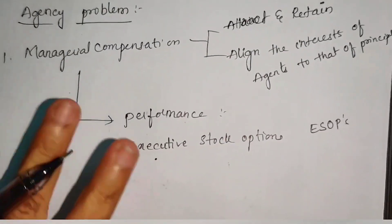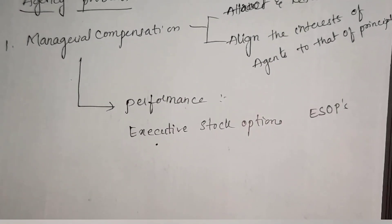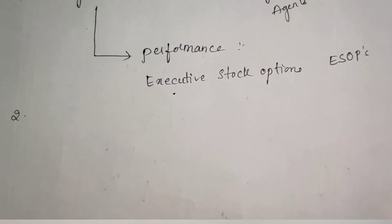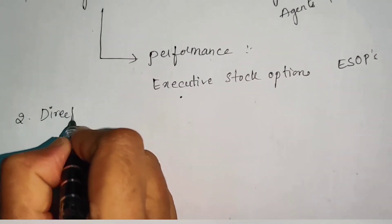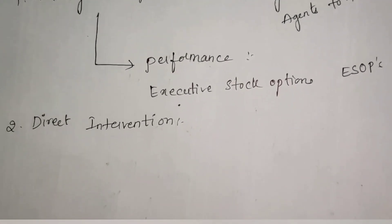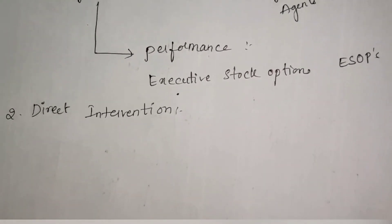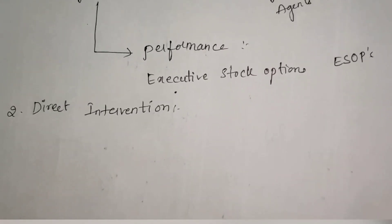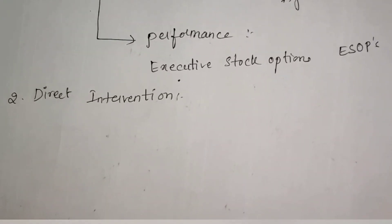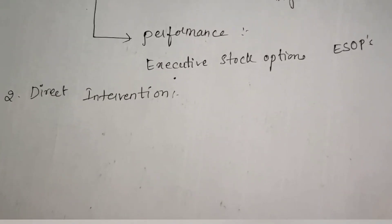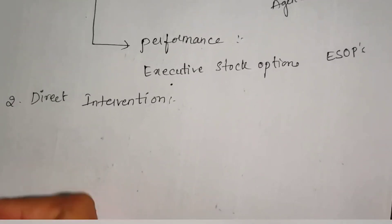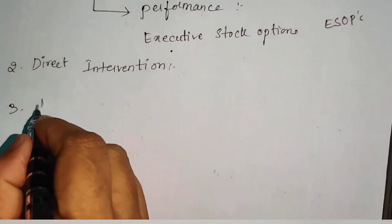If the agent is not satisfied with this compensation, it ultimately leads to the agency problem. The second mechanism the principal will use is direct intervention. Usually shareholders are institutional investors like insurance companies, pension funds, and mutual funds. They directly intervene and control the activities of the agent. Usually the top-level management doesn't like much intervention into the organization, so that also leads to agency problem.